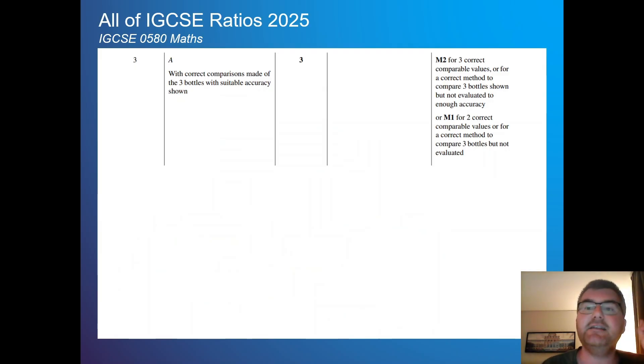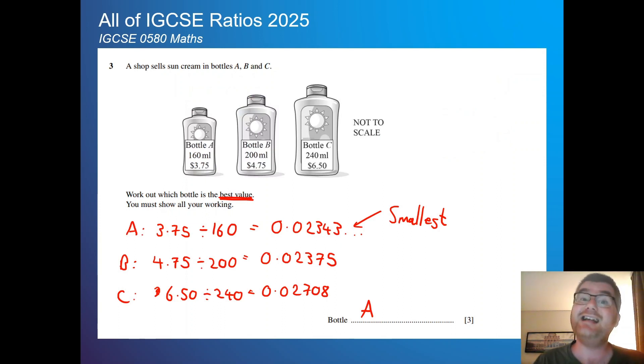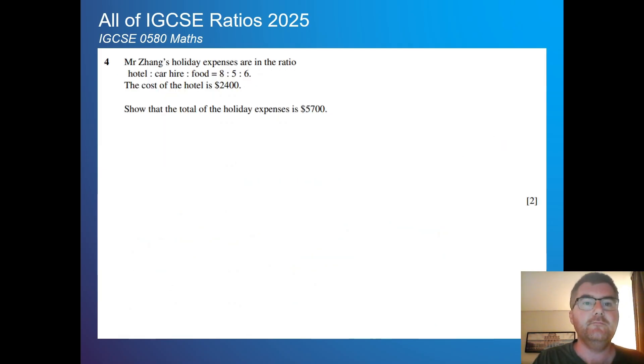You can see the mark scheme. There's a few different ways of approaching this. I think this is a very straightforward way. Take the amount of money, divide it by the capacity that you have. You can work out the cheapest price you can get one milliliter for.